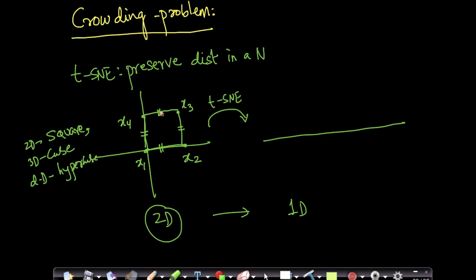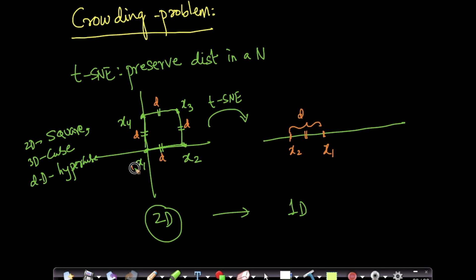We learned this in linear algebra — if I have points in d-dimensional space, in 2D they are corners of a square. Now if I want to embed them into one-dimensional space, let us go through the problem we will quickly run into. I will place my x1, and then place x2 such that the distance between x1 and x2 is d. So I have embedded x1 and x2.